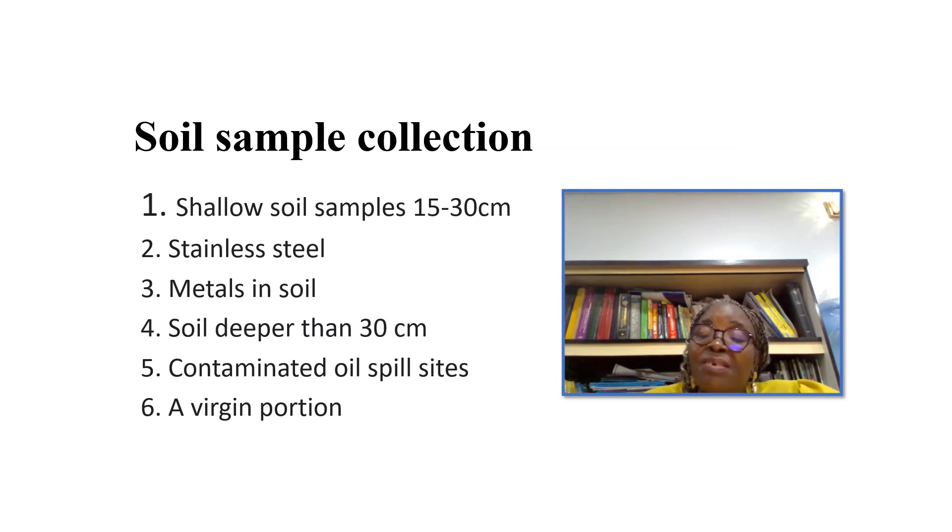Soil sample collection is very difficult, but you need to do that. Shallow soil samples 15 to 30 cm deep can be taken with scoops, trowels or shovels, and then stainless steel can be used when sampling for organic and high-density polypropylene. For metals in soil, you use plastic scoop because if you use a metal, it is going to affect your result. So you use plastics, plastic scoops or shovels. And for soil deeper than 30 cm, you use an auger or chorea. Know that for contaminated soil space sites, you collect samples from various depths. You collect at least 10 to 15 samples from each sampling unit and place in a bucket or tray. And then when you go to your lab, you begin to treat your sample to get a laboratory sample for analysis. Then always remember that a virgin portion should be sampled to serve as a reference.